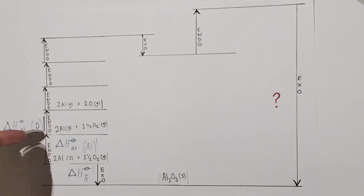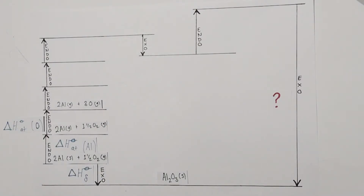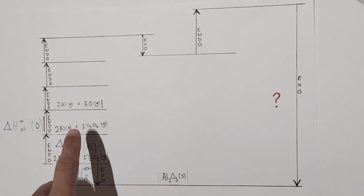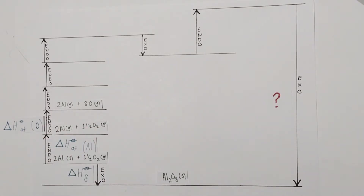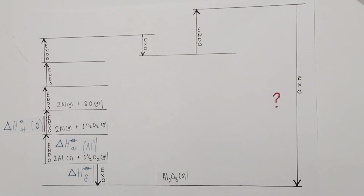The next enthalpy change, also endothermic in nature, is the enthalpy change of atomization of oxygen — converting our oxygen molecules from gaseous molecules into moles of gaseous oxygen atoms. We're releasing three moles of oxygen atoms in the gaseous state via this process, putting in energy to break the covalent bonds between oxygen atoms in their molecules to release gaseous oxygen atoms.